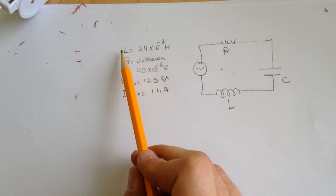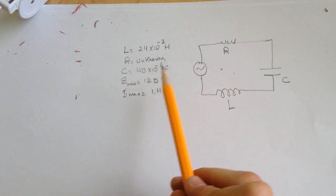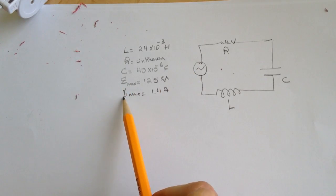They give us the inductor, the R is unknown, we have the capacitor, the voltage of the generator is max, and we have the Imax.